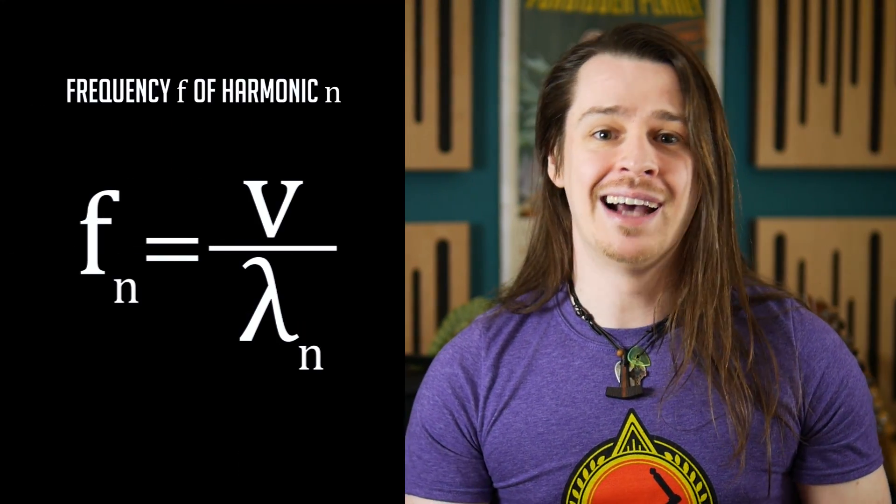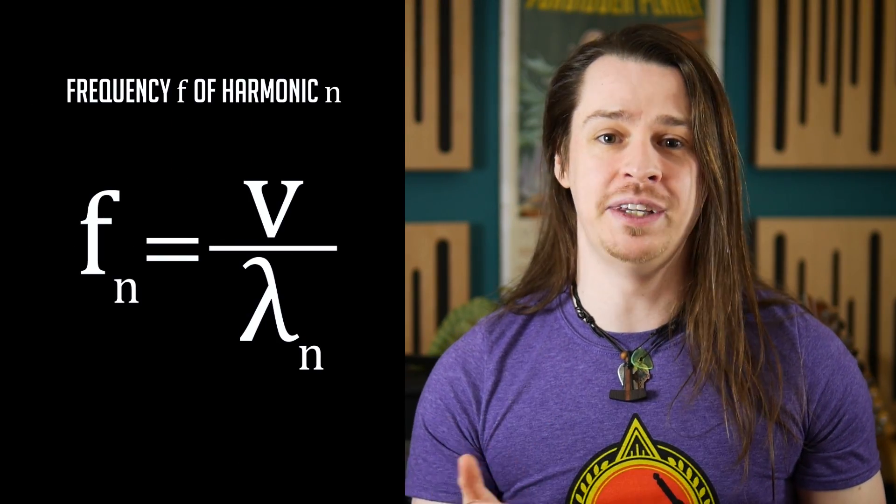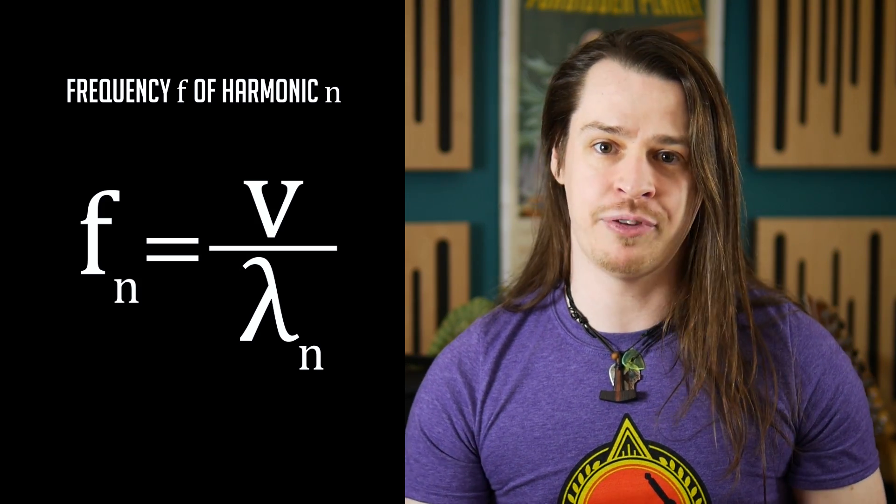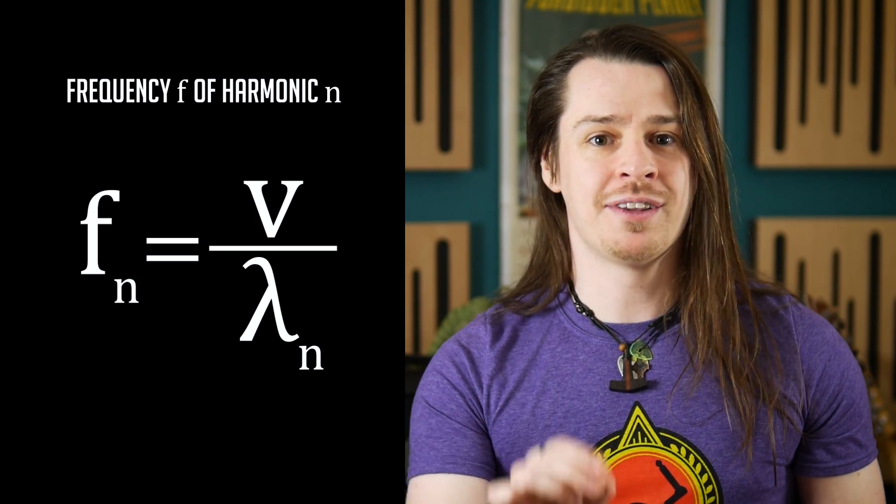From there it's easy to work out the frequency of each harmonic, as f equals v upon lambda, where v is the speed of the wave. Note that this is not the speed of sound in air, but the speed of wave propagation in the string, which is derived from the tension and mass per unit length of the string.